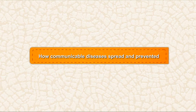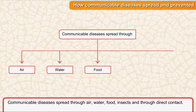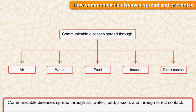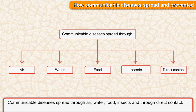How are communicable diseases spread and prevented? Communicable diseases spread through air, water, food, insects, and through direct contact.